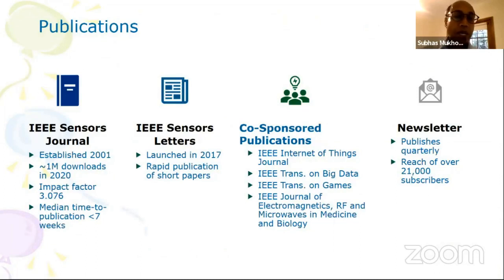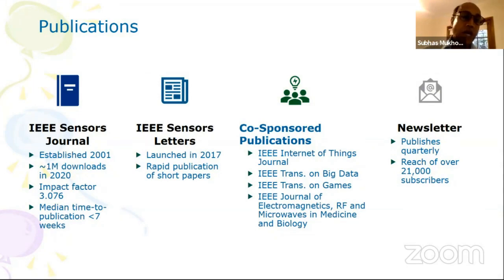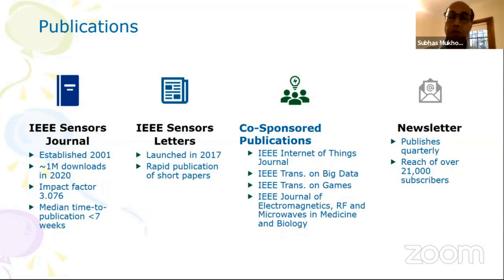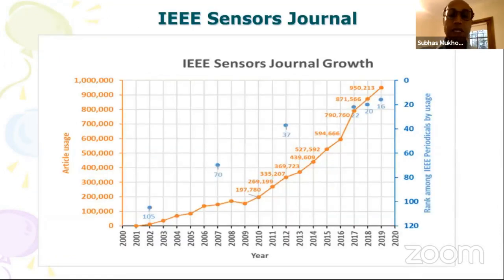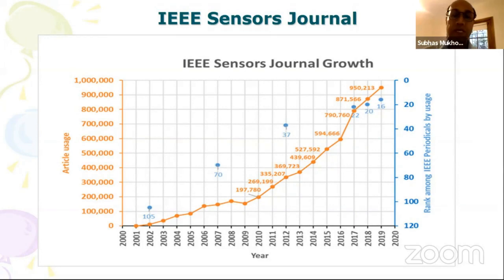In terms of activities, we have journals. The main journal is the IEEE Sensor Journal, which was established in 2001, and later on there is another journal called Sensor Letters. The difference is that IEEE Sensor Journal usually features regular papers of eight pages and above, whereas Sensor Letters is relatively short, three to four pages. There are also co-sponsored publications, and one very good journal is the IEEE Internet of Things Journal with an impact factor of nine and above. The number of article usages is almost reaching one million and the ranking is improving with time — currently ranked 16 in IEEE publications.